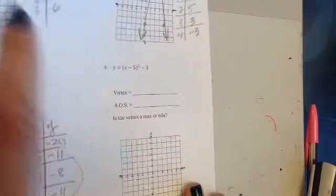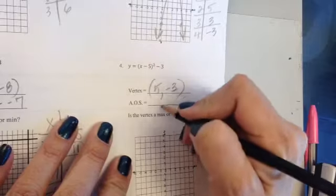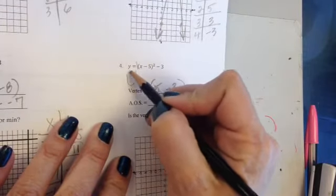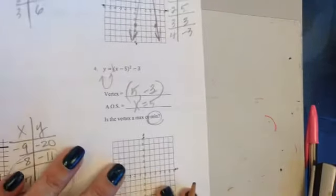Let's go on to number 4. The vertex is going to sit at 5, negative 3, axis of symmetry, x equals 5. This parabola is going to open up. The a value is 1. The vertex is going to be a minimum.